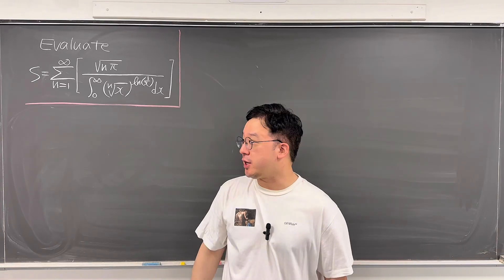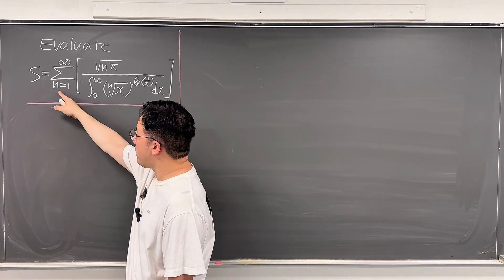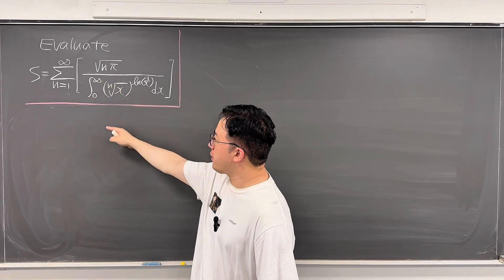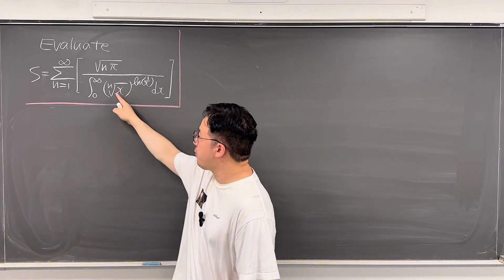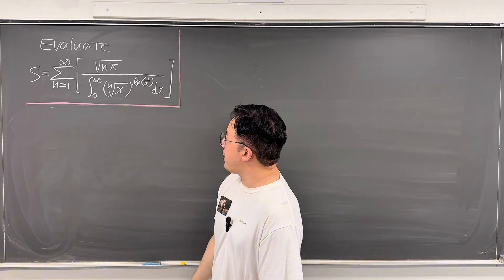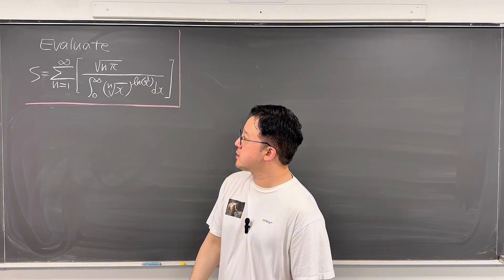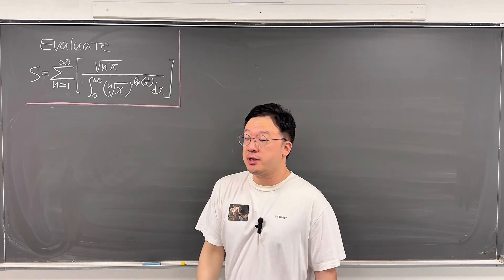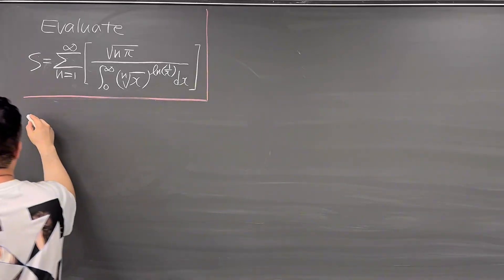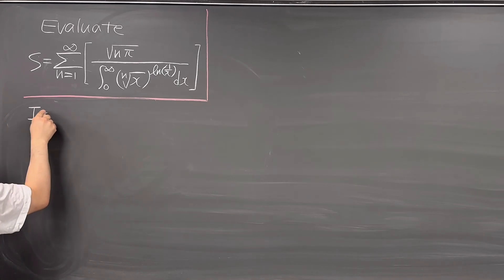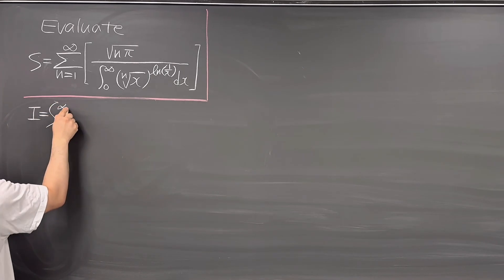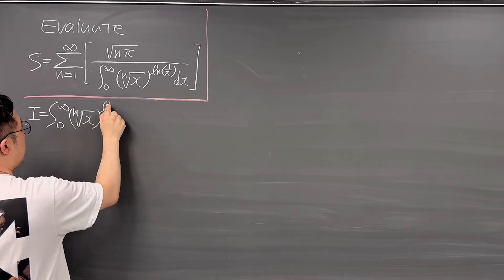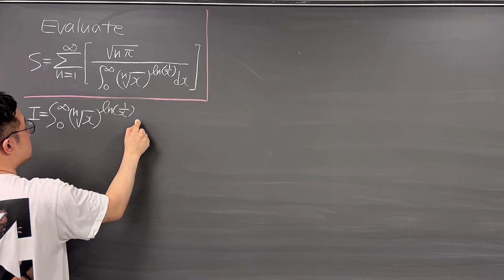Okay, here's the question. Evaluate the summation from n equals 1 to infinity of square root of n*pi over the integral from 0 to infinity of the nth root of x, to the power of ln(1/x), dx.